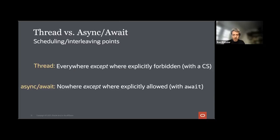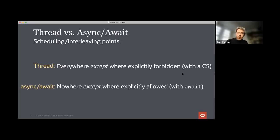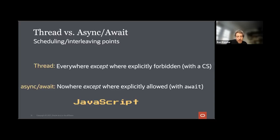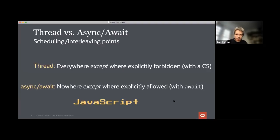If a language already has threads, introducing async-await just adds another mechanism and complicates matters. One good reason to use async-await is when a language has only one thread and no interleaving by default. JavaScript is such an example: all existing code written in the 20-plus years before JavaScript got async-await assumed everything is atomic since JavaScript is single-threaded. Introducing concurrency requires making interleaving explicit. So async-await makes sense for JavaScript.